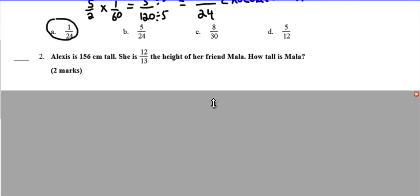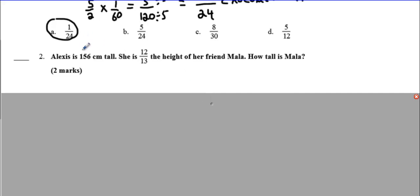Let's look at the second one. Alexis — this is a tough one, so pay attention. Alexis is 156 centimeters tall. She is 12/13ths the height of her friend Mala. How tall is Mala? We know Alexis is 156 centimeters tall. Then it says 'she' — who is she? Alexis. So we're going to replace 'she' with 156 centimeters.